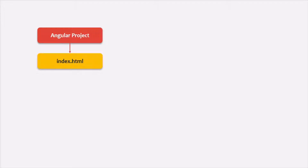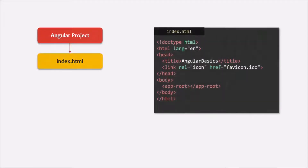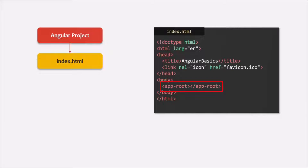The index.html file of the Angular app looks something like this. If you notice, there is no JavaScript file in this index.html and neither is there any stylesheet. The body of this index.html file has this app-root tag. What is this app-root tag, and how does Angular know what it has to load in place of this app-root? Let's try to understand that.